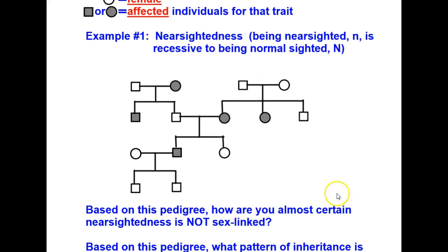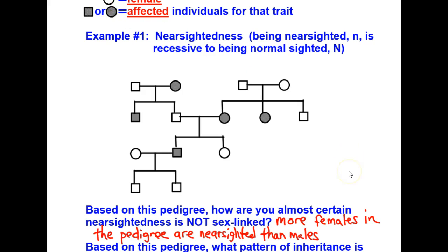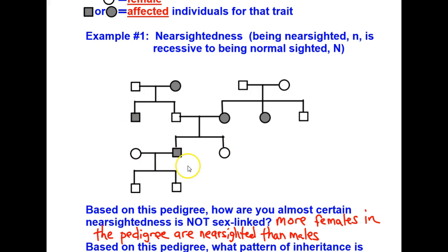Based on this pedigree, how are you almost certain nearsightedness is not sex-linked? It's because more females in the pedigree are nearsighted than males. We have three females that inherited the trait of nearsightedness, whereas only two males inherited it. Remember that in a sex-linked trait, typically only males show the trait, and it's very rare for a female to have it at all — much less three of them versus two males.